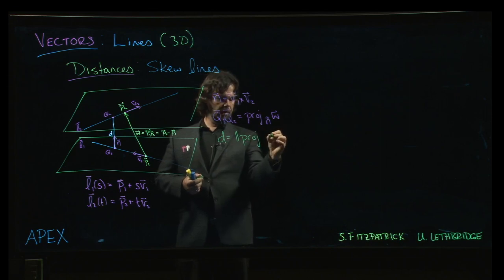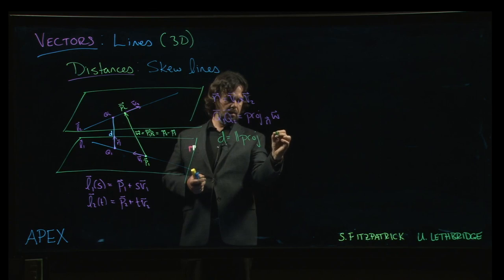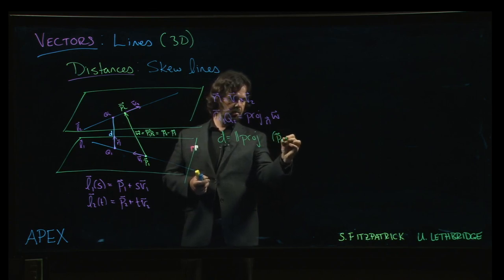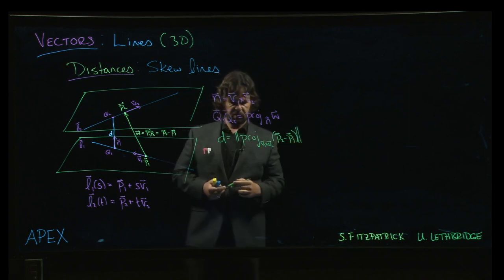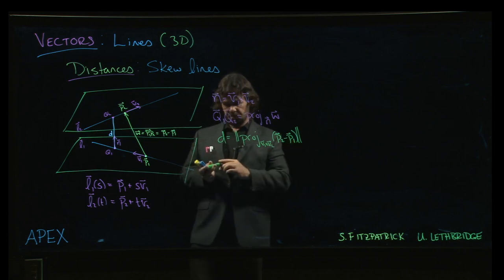The distance is the magnitude of the projection of W, which is the vector P2 minus P1, onto this cross product V1 cross V2. And once again, you have a formula.